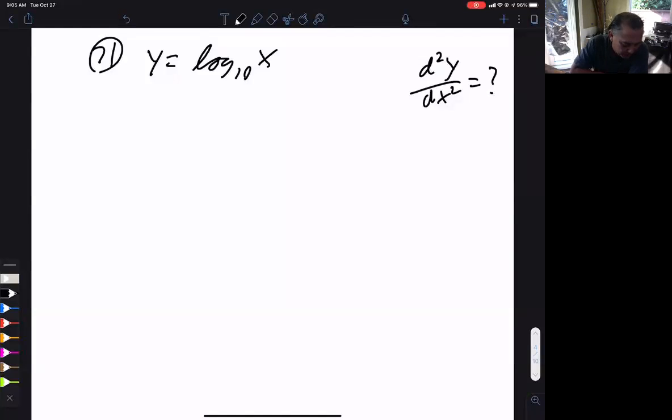So this is number 71 from section 3.9. They want the second derivative of log base 10 of x. So the first derivative, we're going to use our log rules.